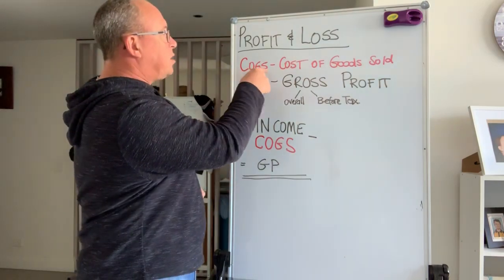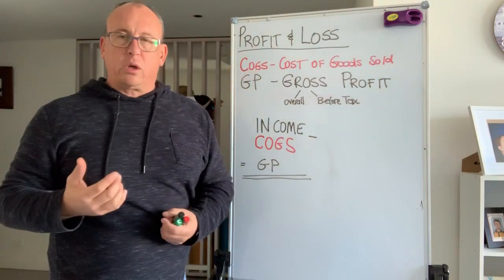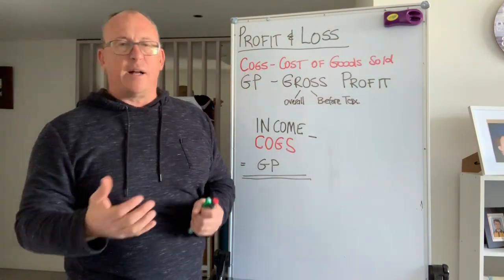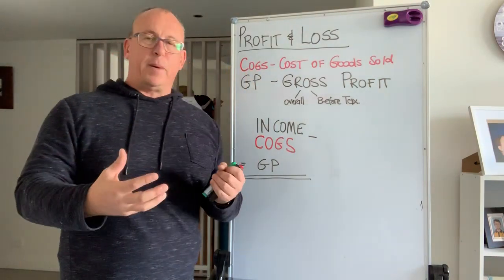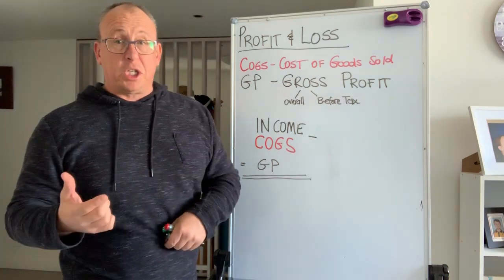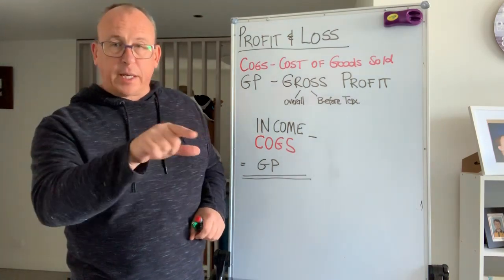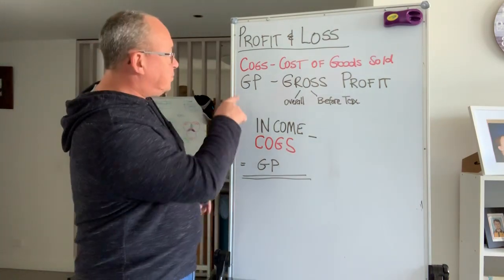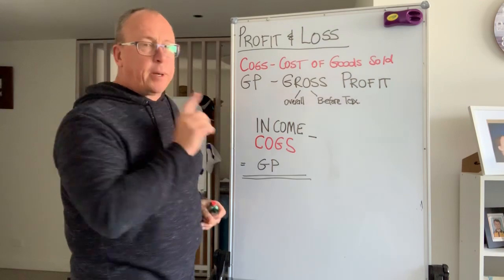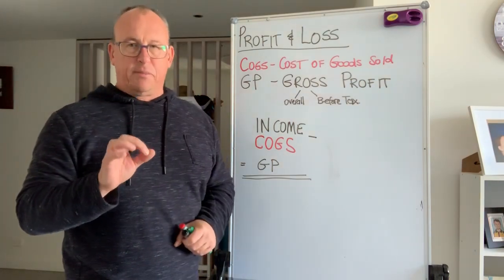So quick review: cost of goods, COGS, also called cost of sales, variable expenses — it's got a few other names. If you haven't downloaded my cheat sheet, go to one of my other videos where you can click the link and get it. GP — this is where the distinction I want you to get comes from.